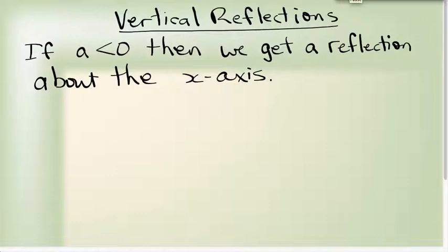Now the next thing that a can also tell us is it'll tell us whether we have a vertical reflection. So if a is less than 0, then we're going to get a reflection. So if I have something like y equals negative f(x), that means our function has just been flipped down below the x axis.